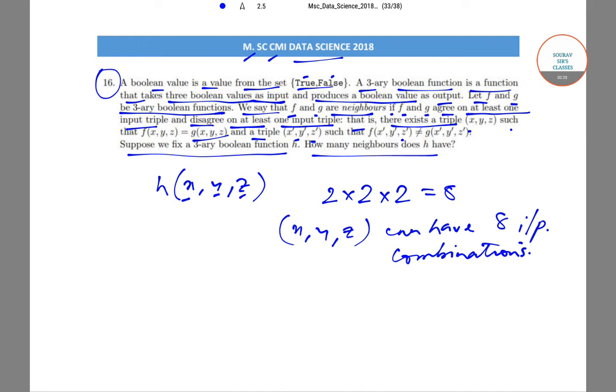So j(x,y,z) can be equal to h(x,y,z) for suppose one combination, or one input combination, or it can agree on two input combinations or three input combinations.